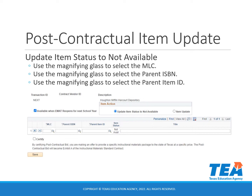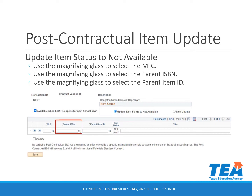To change an item status to not available, you will select update item status to not available in the item action box. You will select the MLC using the magnifying glass, then select the parent ISBN — which is the program ISBN — for the item you wish to change the status. Next, you will use the magnifying glass to select the parent item ID. The title will populate based on the selections you've made. Some programs from Proclamation 2015 may have the same ISBN but different item IDs, so carefully check that you have selected the correct program.